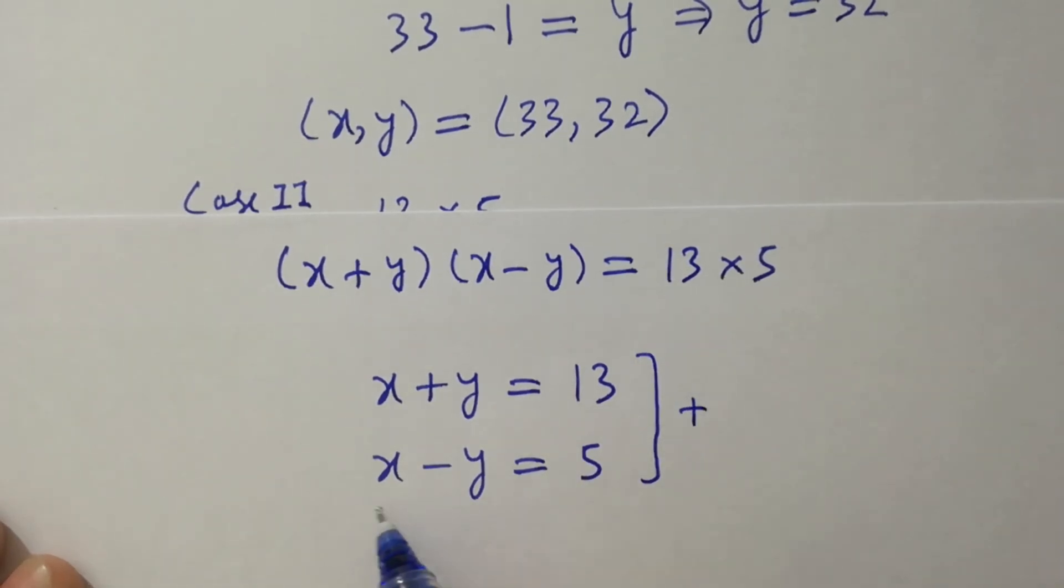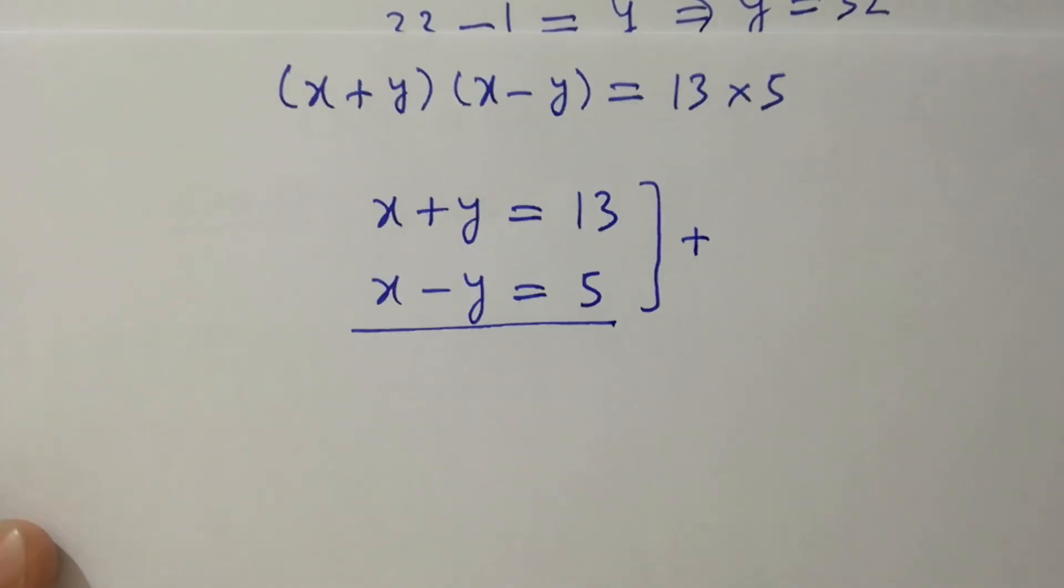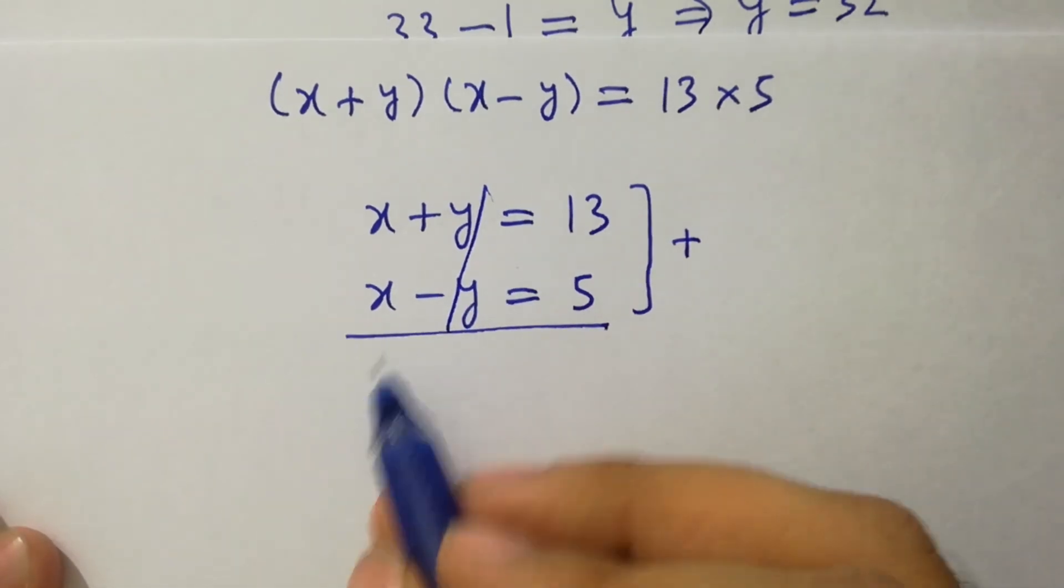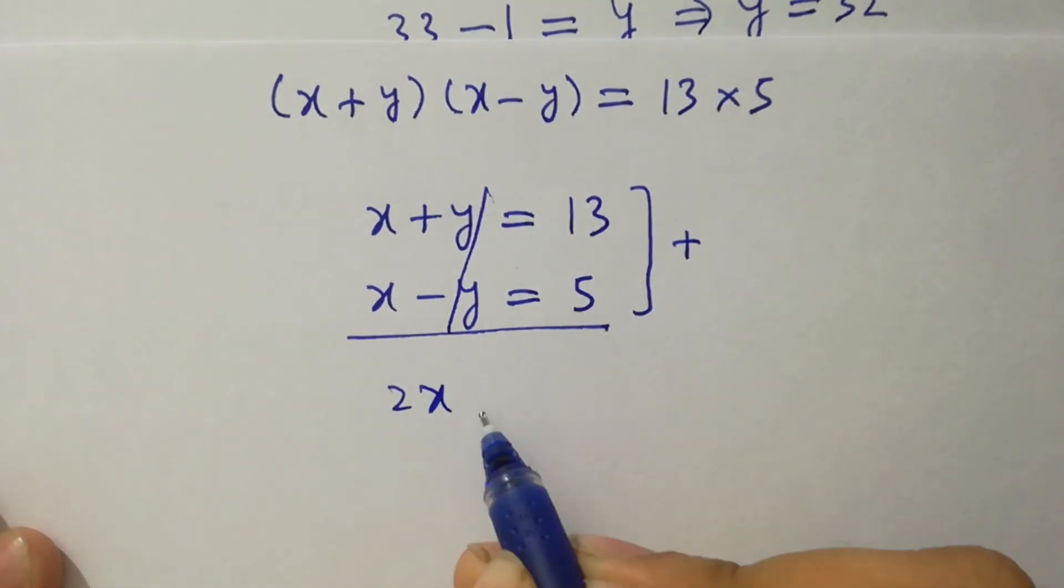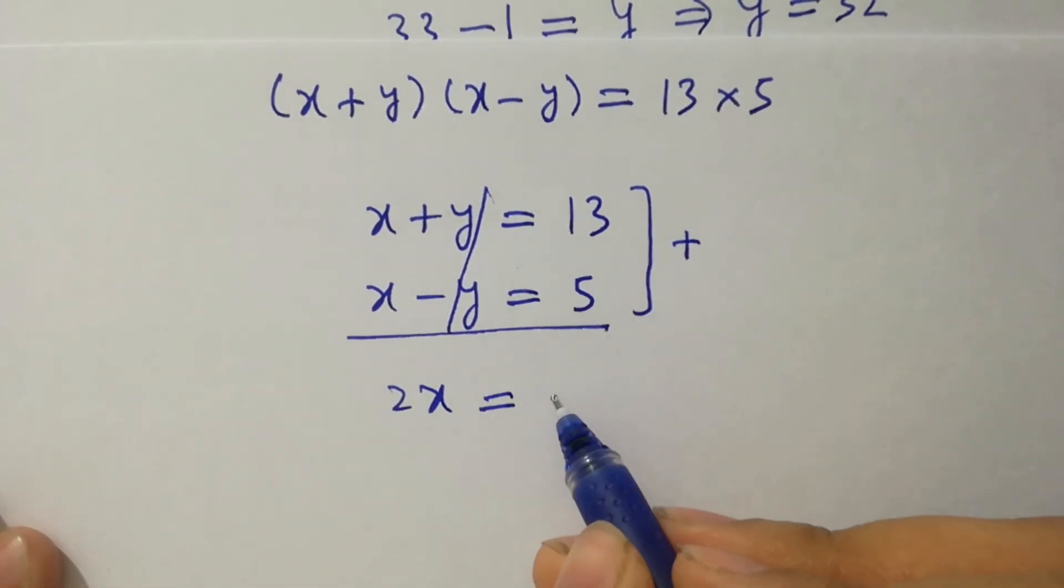Y cancels, x plus x is 2x, equal to 13 plus 5 is 18.